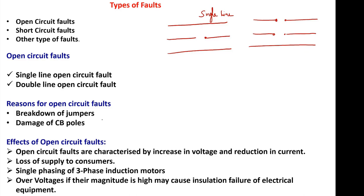What are the effects of open circuit faults? Open circuit faults are characterized by increase in voltage and reduction in current. When an open circuit occurs, in the remaining phases the voltage will increase and the current will reduce. Another effect is loss of supply to consumers connected to the disconnected phase. Three-phase induction motors operating on two phases experience single phasing, which will damage the motor.